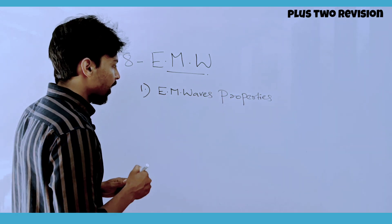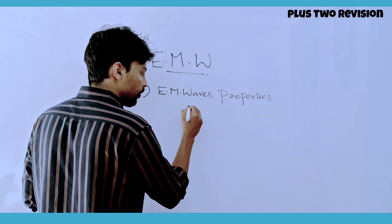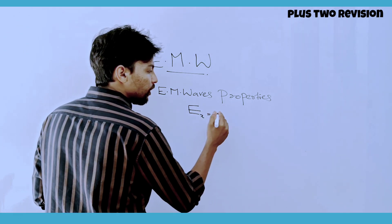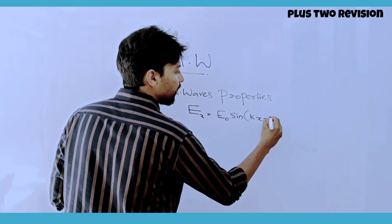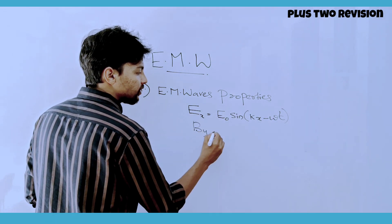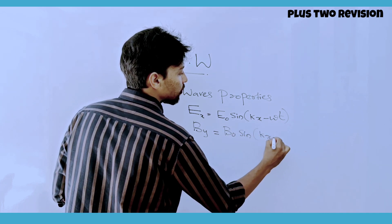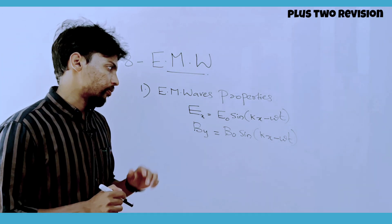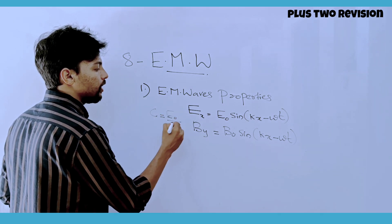If you relate to the two equations, we will see the problem. Ex is the electric field, and the equation is E0 sin(kx − ωt). The magnetic field By is equal to B0 sin(kx − ωt). These are the two key equations.